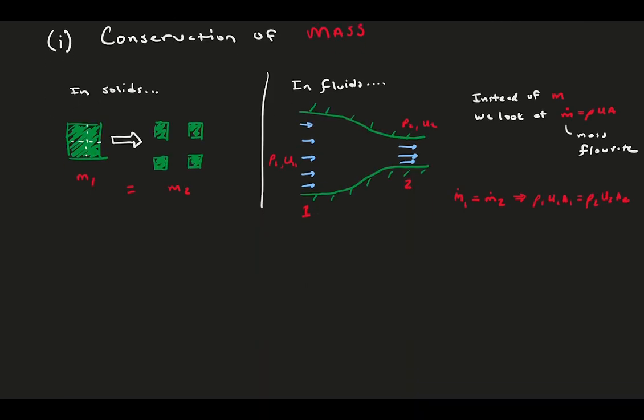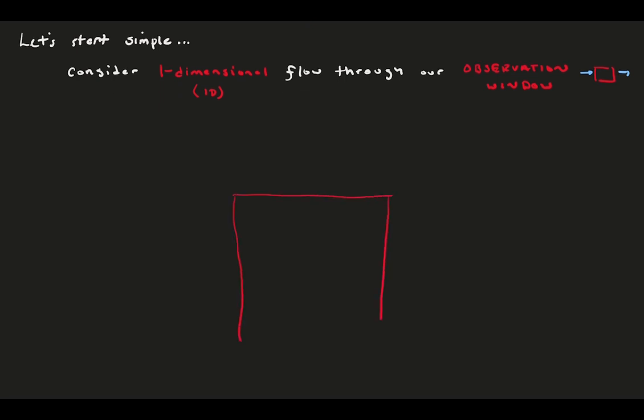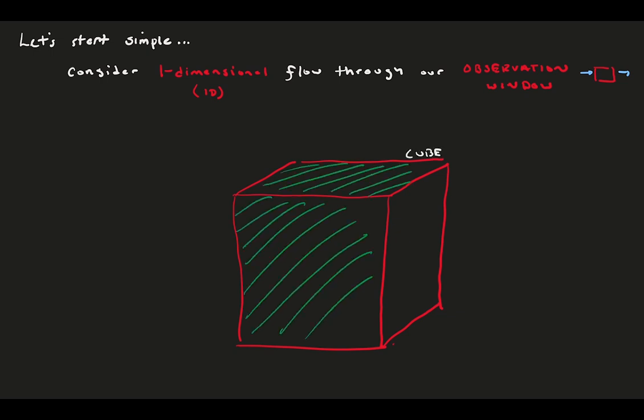So let's keep this mass flow rate conservation in our minds as we start to think about looking through a specific observation window. Consider a one-dimensional flow, meaning flow is only in one direction, passing through our observation window, which is represented as a cube in space. We draw our cube in the x, y, z coordinate system, and in this case it is 1D, so flow is restricted to move only in the x direction. The green walls represent capping our cube in the other direction, so flow can't get in or out.